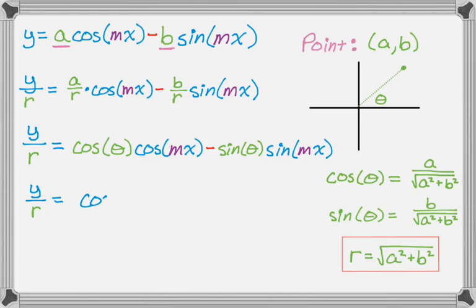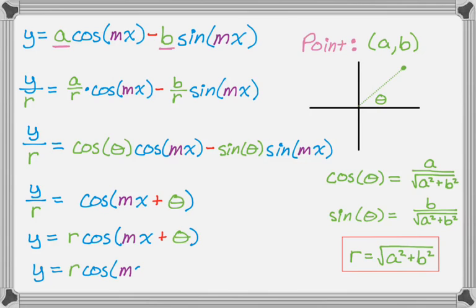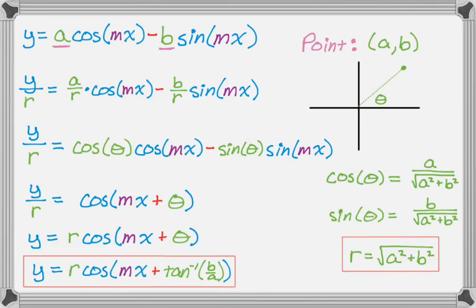So from this point, y over r equals cosine of mx plus theta. I always put the thing with x first, just because you can. It's not a big deal, and it looks a little more normal. Then I multiply across by r to get y equals r cosine of mx plus theta. And then the question is, what's theta? Well, if you go back to that picture, you can see that the tangent of theta would be b over a. So theta is the inverse tangent of b over a. And that's kind of the idea.